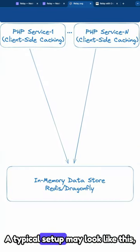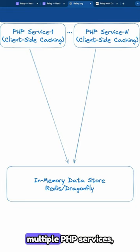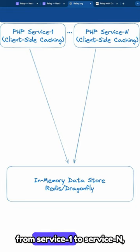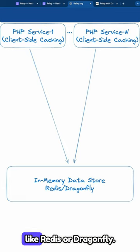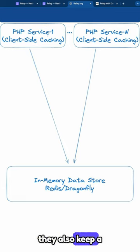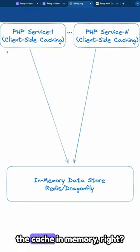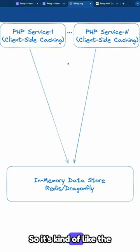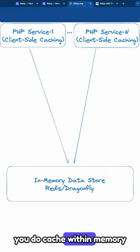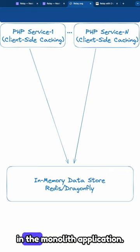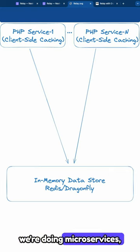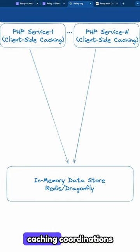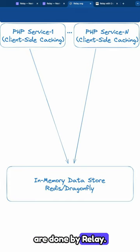A typical setup may look like this, where you have multiple PHP services from service one to service end, and all of them are talking to your in-memory data store like Redis or Dragonfly. In the meantime, they also keep a partial replica of the cache in memory. It's kind of like the olden days where you do cache within memory in a monolith application, but this time around we're doing microservices and all the client-side caching coordinations are done by Relay.